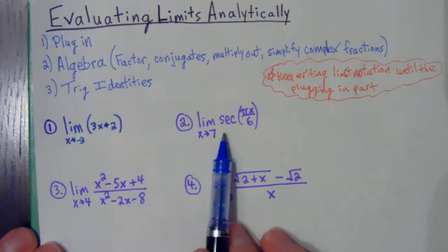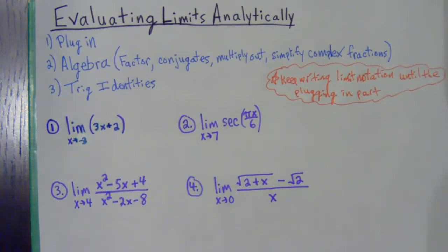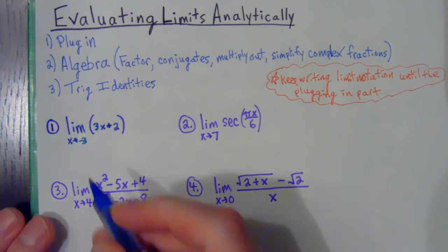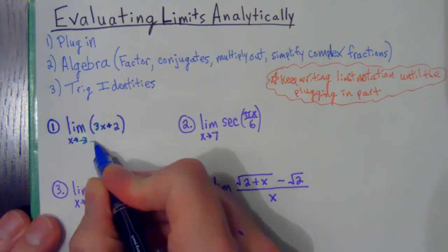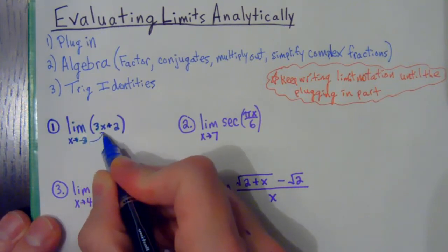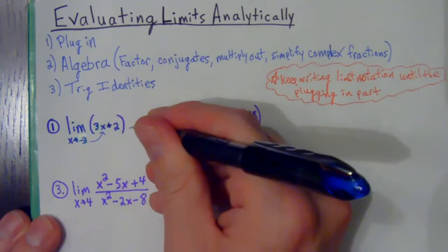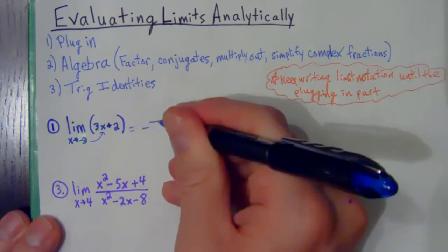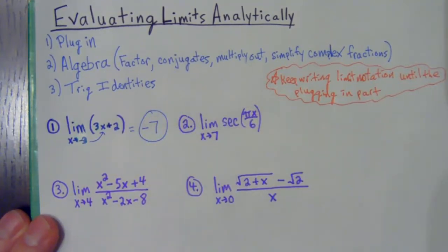The first couple of limits have pretty easy functions where we can just plug in and get an answer. So if I take negative three and plug that in, that's going to be negative nine plus two, which gives us negative seven for our answer.